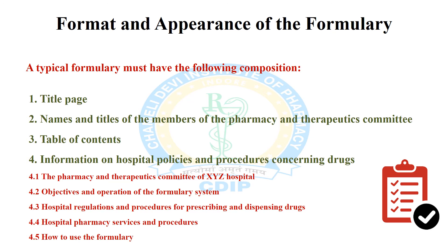There is no single format or arrangement which all formularies must follow, but a typical formulary must have the following compositions: a title page, names and titles of the members of the pharmacy and therapeutic committee, a table of contents, information on hospital policies and procedures concerning drugs, the pharmacy and therapeutic committee structure, and objectives and operation of the formulary system, as well as hospital regulations and procedures for prescribing and dispensing.